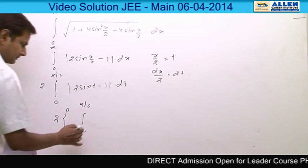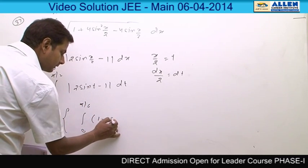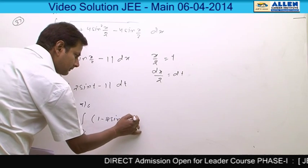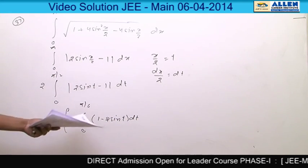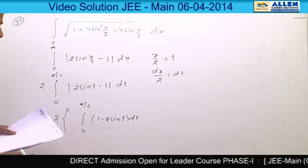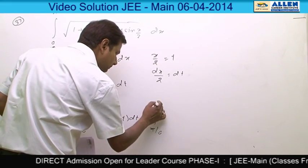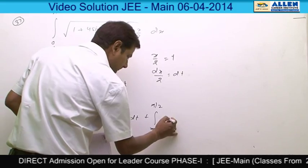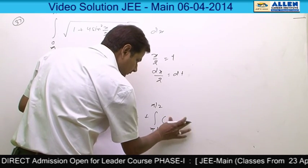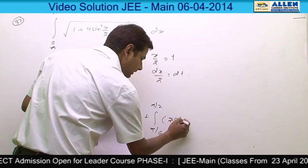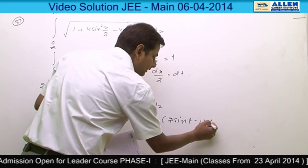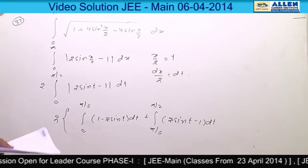So integration 0 to pi by 6, now mod will express as 1 minus 2 sine t dt, plus integration pi by 6 to pi by 2, 2 sine t minus 1 dt. Now this is simple integration.